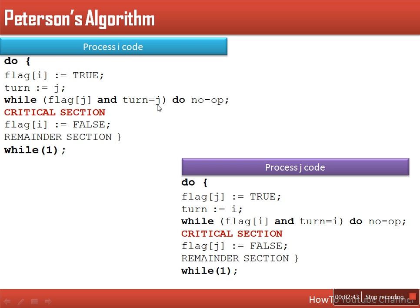If any of these conditions is false, execution will continue and process i will enter its critical section. Once the critical section is done, it will set its intention flag to false, indicating it is no longer interested in the critical section. Then the remainder section executes and the process keeps going. Peterson's algorithm is suggested for two processes, and we will see how it provides mutual exclusion.